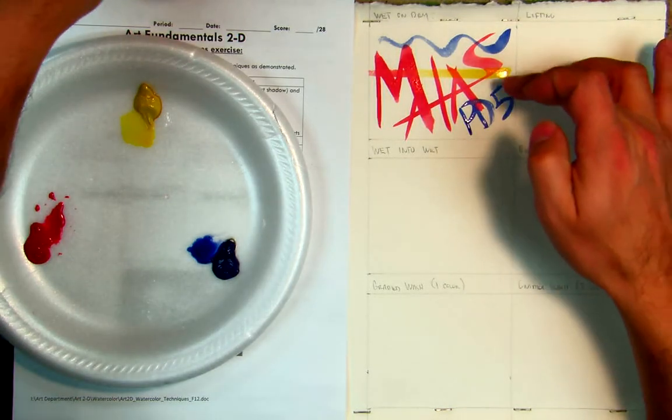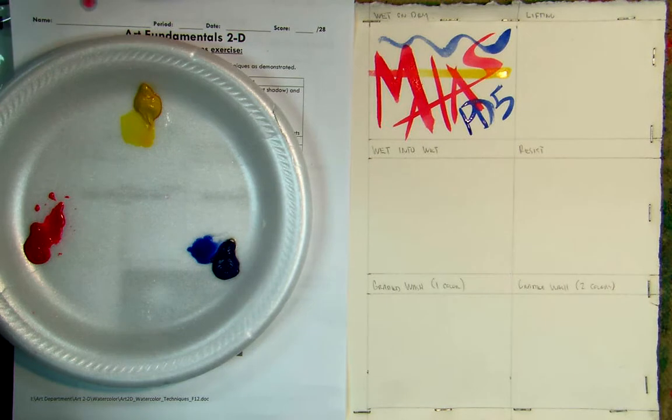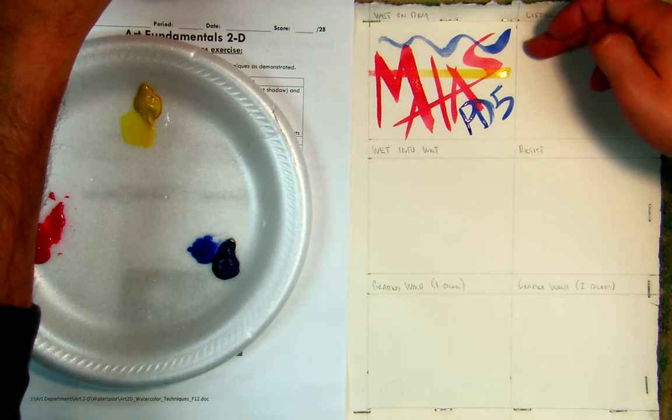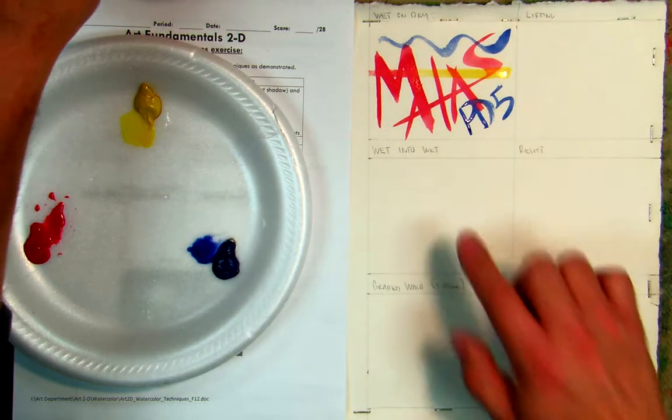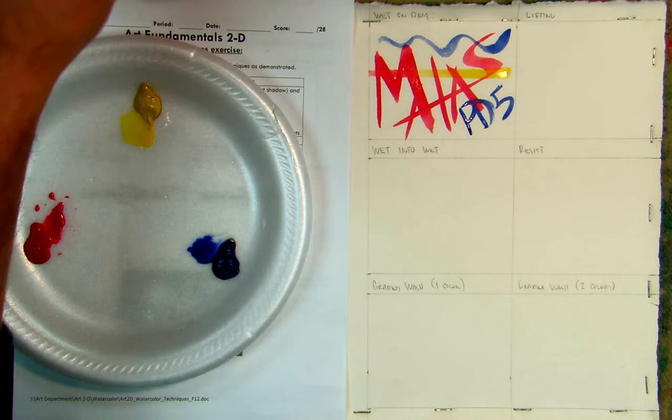Okay, if wet on dry was wet paint on dry paper, what is wet into wet? Wet paint on wet paper, exactly. And if wet on dry was really good for details and sharp edges, what do you think wet into wet is going to be? Backgrounds and blending, there we go.